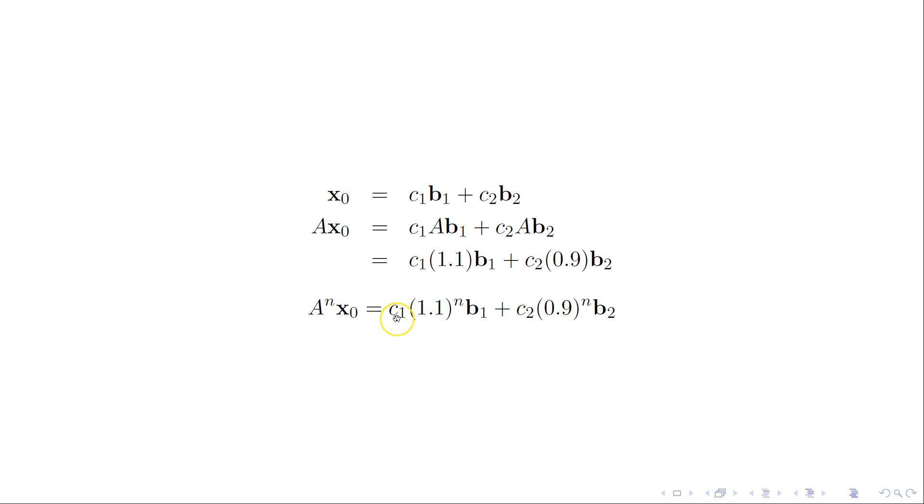If that's a positive number, then regardless of what c2 is, this is going to go down to zero. But if this c1 is a positive number, we're going to see that the populations are going to grow exponentially.